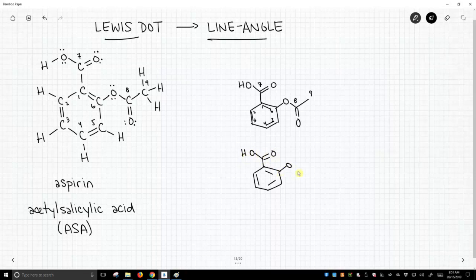But we've removed a lot of details from our picture, and that's what makes line angle structures so easy to draw. There's a problem with that though. You need to see in your mind, when you look at this structure of aspirin or acetylsalicylic acid, that all those lone pairs are there.